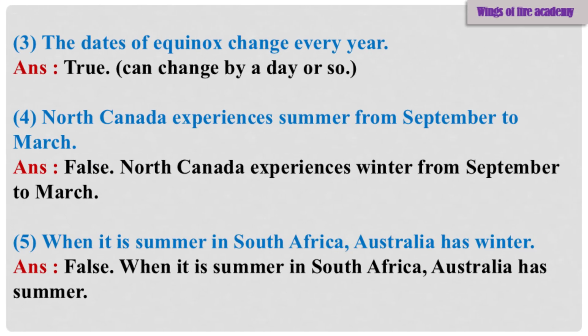Sub-Question 3: The dates of equinox change every year. Answer: True — can change by a day or so. Sub-Question 4: North Canada experiences summer from September to March. Answer: False. North Canada experiences winter from September to March. Sub-Question 5: When it is summer in South Africa, Australia has winter. Answer: False. When it is summer in South Africa, Australia also has summer.